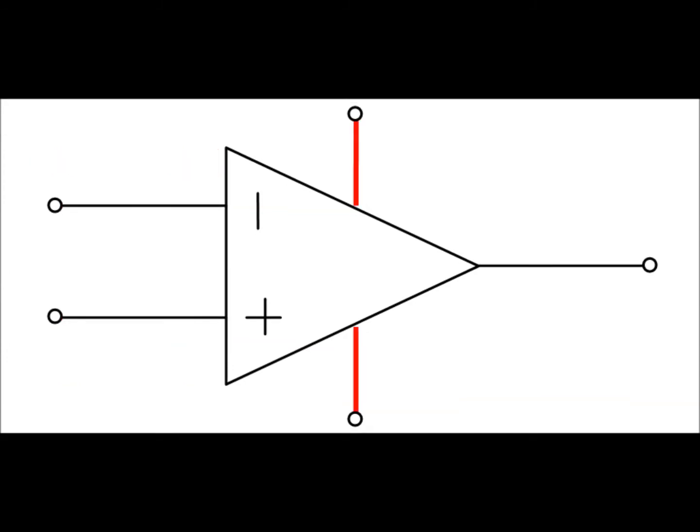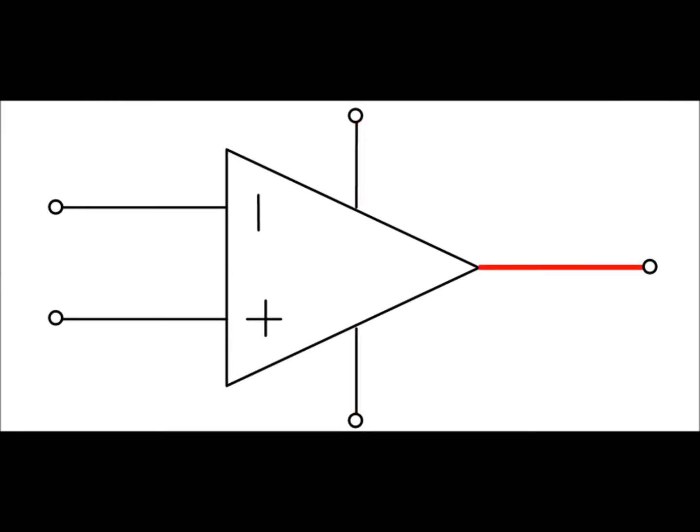The two vertical lines are the voltage rails, and the right horizontal line is the voltage output.